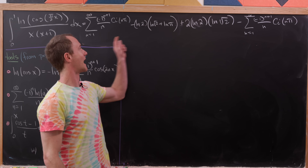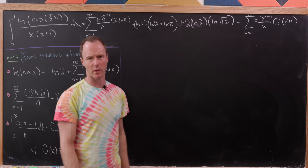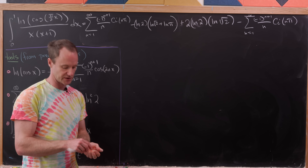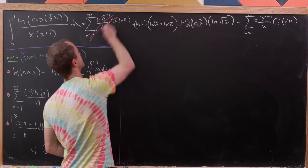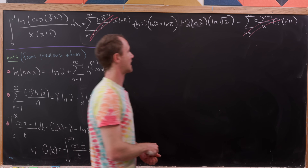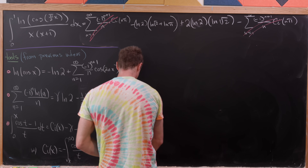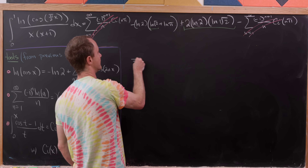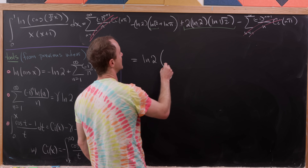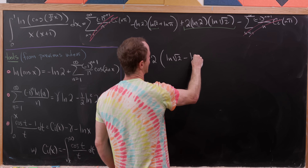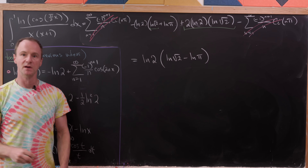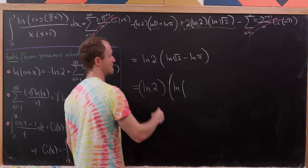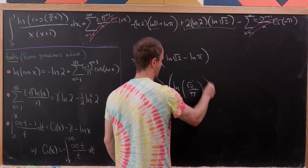Adding I₁ and I₂, the alternating cosine-integral sums cancel exactly. The remaining logarithmic terms combine as: ln 2 · (ln√2 + ln π) minus ln²(2) — after writing ln(2) = 2·ln(√2) — which simplifies to ln 2 · (ln√2 + ln π − ln(√2)) ... ultimately giving ln 2 · ln(√2 / π). The final answer is ln(2) · ln(√2 / π).